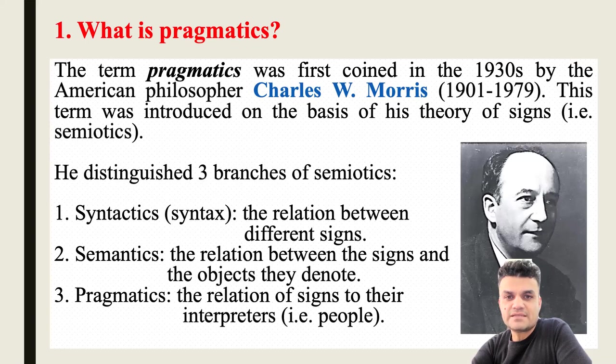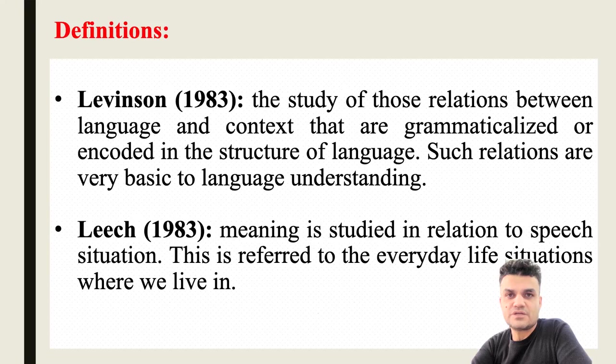In syntax, as a linguist, we usually study the relation between different signs — according to Charles Morris. Within semantics, we study the relationship between the signs and the objects they denote. Within pragmatics, we study the relationship of signs to their interpreters — that is, people in general.